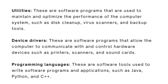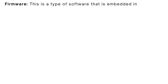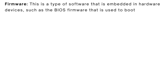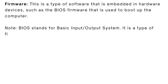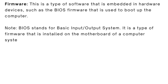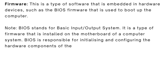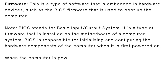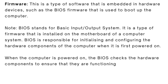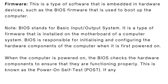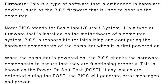Firmware is a type of software embedded in hardware devices — such as the BIOS firmware used to boot up the computer system. BIOS stands for Basic Input Output System. It is installed on the motherboard and is responsible for initializing and configuring the hardware components of the computer when it is first powered on. When the computer powers on, the BIOS checks all hardware components to ensure they are functioning properly — this is known as the Power-On Self-Test, or POST.